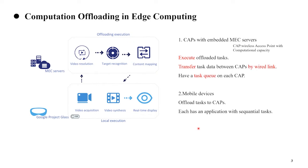Next, I'll introduce an example of computation offloading in mobile edge computing. For instance, the picture shows Google Project Glass with AI technology, including the following function modules: video capture, video processing, target recognition, content mapping, video assistance, and real-time display. Among them, video processing and content mapping require massive computational resources, and uploading them to edge servers can efficiently reduce the processing delay of the overall application.